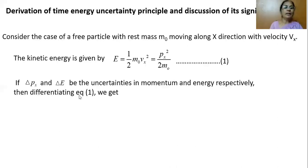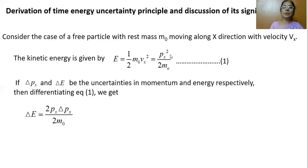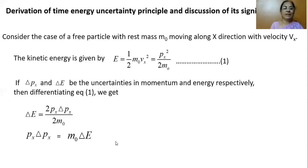We know momentum is m into v, so m0 vx squared can be written as px squared by 2m0. If delta px and delta E are the uncertainties in momentum and energy respectively, then differentiating equation 1 we get: delta E equal to 2px delta px by 2m0. Simplifying, px delta px equals m0 delta E, so delta px equals m0 by px times delta E.